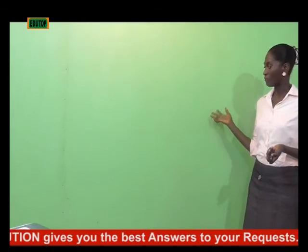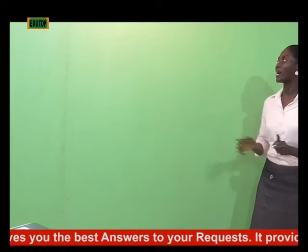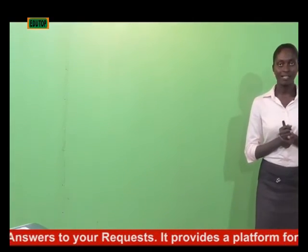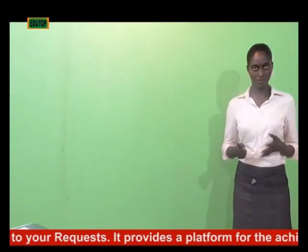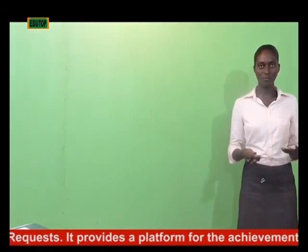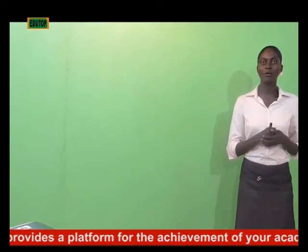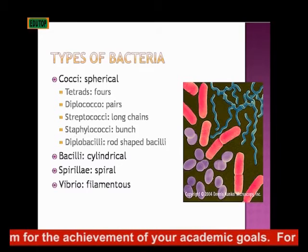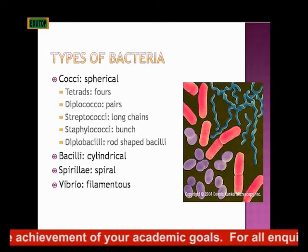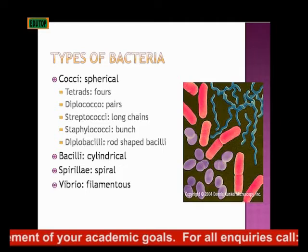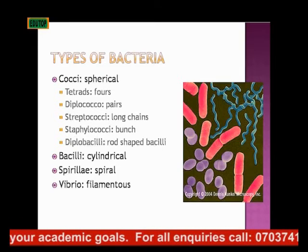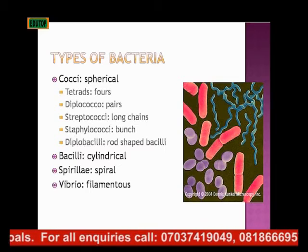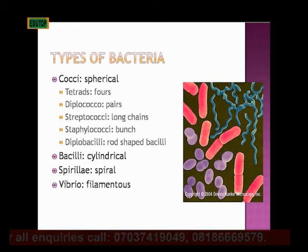This is an example of bacteria. Bacteria are classified according to their shapes. We have the cocci — those are the spherical shaped bacteria — and they are also in groups. We have the tetrads, those that are found in fours. Then the diplococcus, those that are in pairs. We have the streptococcus, the long chain spherical bacteria. Then we have the staphylococcus — the spherical shaped bacteria in a bunch. We also have the diplobacilli, which are rod-shaped bacteria.